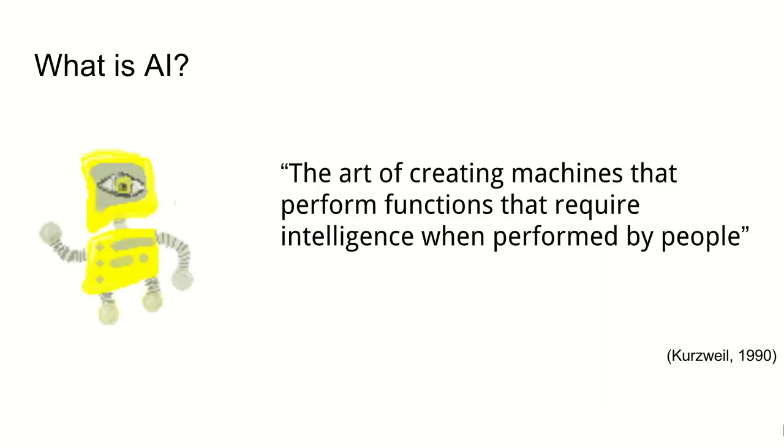Before we start looking at what AI is, it's worth looking at some definitions. This definition here from Kurzweil in 1990 appears at the start of pretty much every textbook I've ever read on AI and it says that artificial intelligence is the art of creating machines that perform functions that require intelligence when they're performed by people.